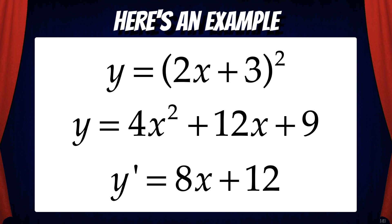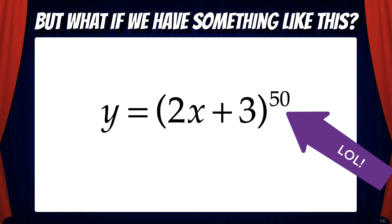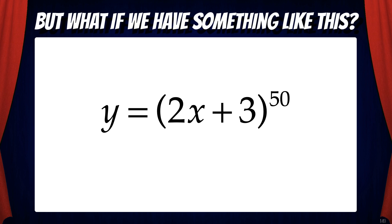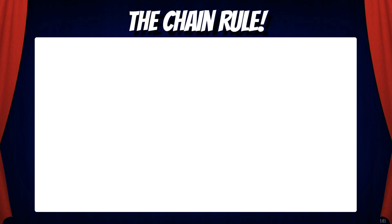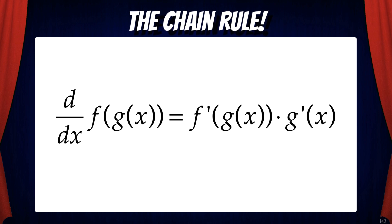Well that wasn't so bad, right? But what if the function y was the quantity of 2x plus 3 to the 50th power? Nobody wants to expand the algebra here, so there has to be a fast way to find the derivative. That's where we're going to use the chain rule. The chain rule says the derivative of f(g(x)) equals f'(g(x)) times g'(x).